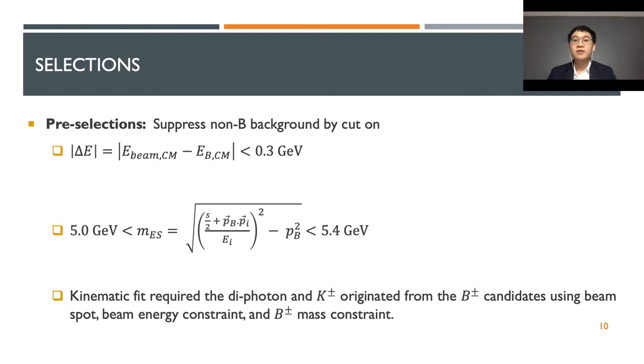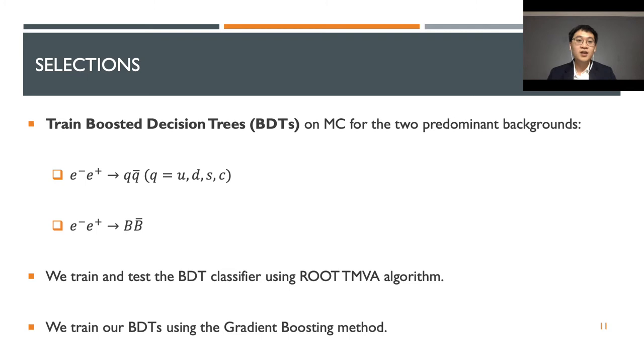Before we train our BDTs, we apply some loose cuts on some variables to get rid of much of the obvious background which can easily be told from the Monte Carlo simulations. This will help the BDTs to focus on more subtle differences rather than these obvious differences. The two variables we use here are delta E, the energy difference between the beam and the B meson in the center of mass frame, and the second variable is the beam energy substituted mass. We also perform the kinematic fit that requires the diphoton and kaon to be originated from the B meson candidate using beam spot, beam energy constraint, and B meson mass constraints. This would help reduce the uncertainty of the photon energy and will help narrow the width of the signal peak.